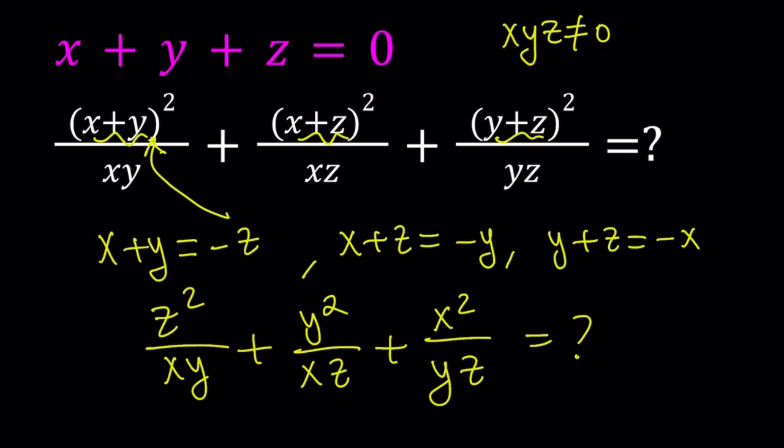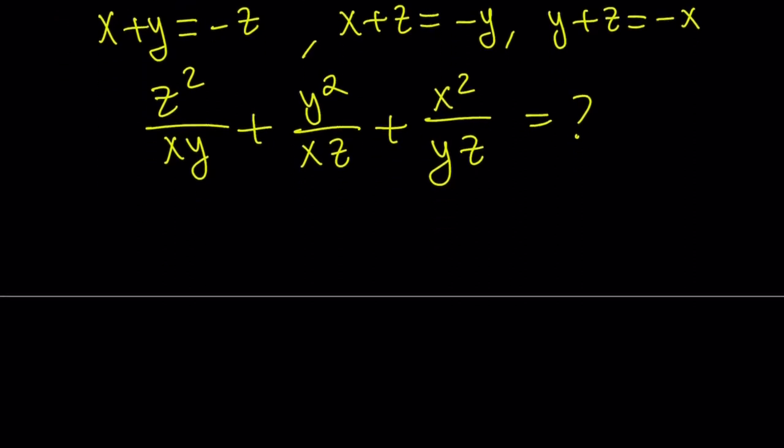How do you do that? The only thing I know is x plus y plus z is equal to 0, and I already used it. So, how do you proceed? Here's what we're going to do next. Let's go ahead and make a common denominator.